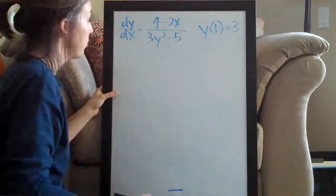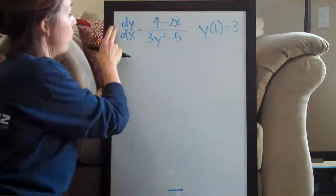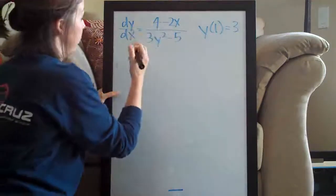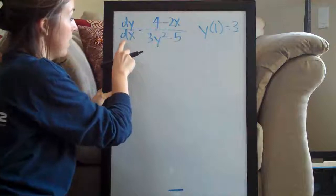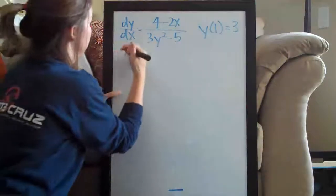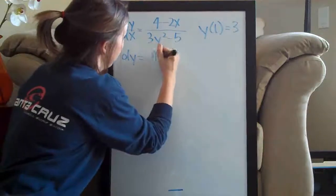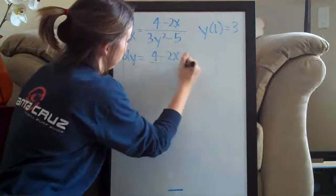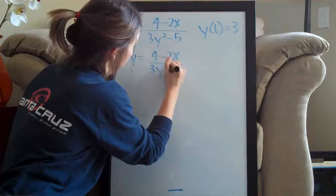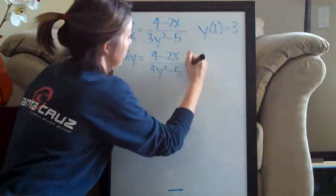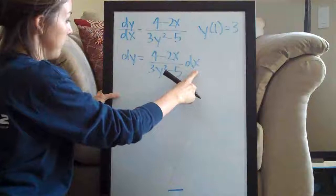So the first thing that we're going to do is separate our variables. We're going to get y's on the left and x's on the right. The way that we're going to do that first is by multiplying both sides by dx which will leave us with dy equals 4 minus 2x over 3y squared minus 5 dx.